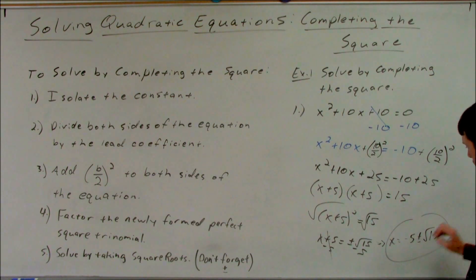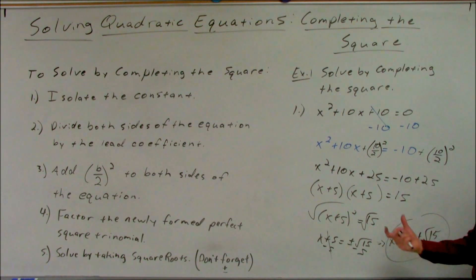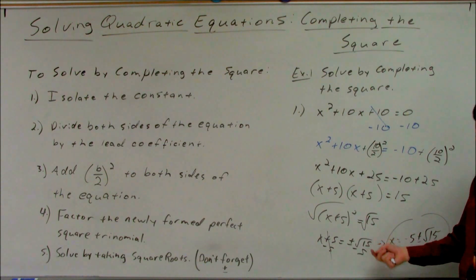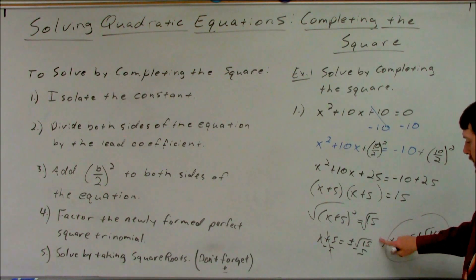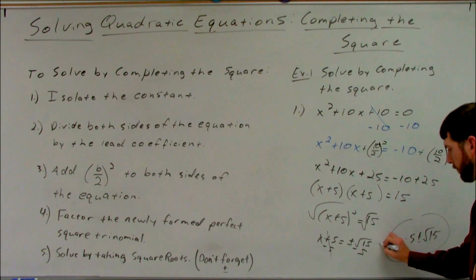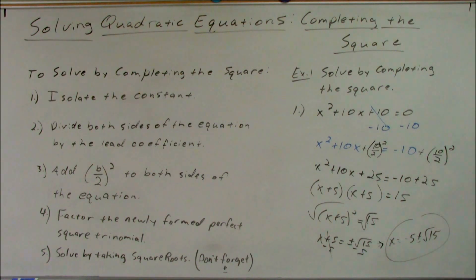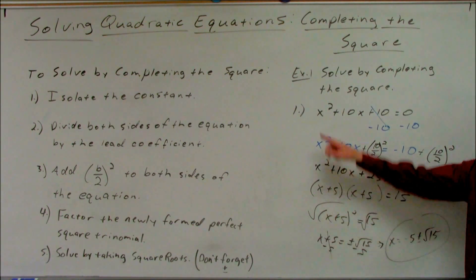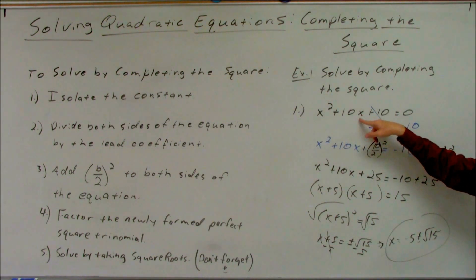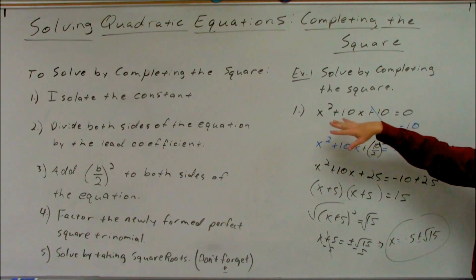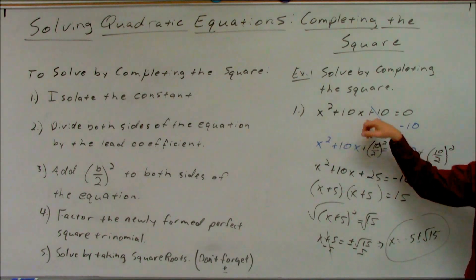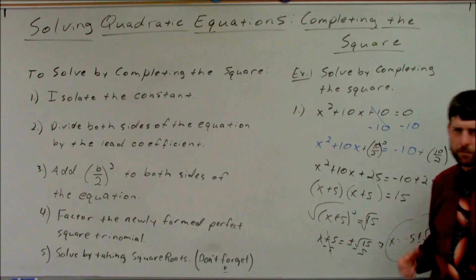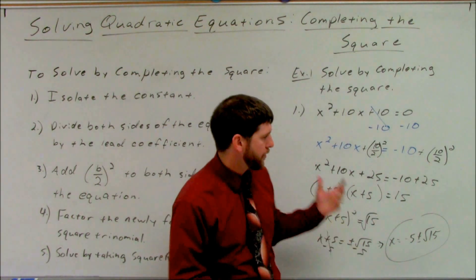Take square root of both sides: x plus 5 equals plus or minus square root of 15. Don't forget that plus or minus. Move your 5, so we get x equals negative 5 plus or minus square root of 15. Remember, you cannot combine a non-square root with a square root — we'll see more about why when we get into our unit on radicals. That's the solution. If you plug back in with positive and negative square root of 15, both give zero, so we can always go back and check.